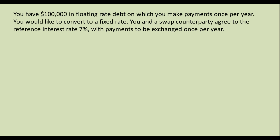In this example you have $100,000 in floating rate debt on which you make payments once per year. That just means that the rate you pay is based on something like LIBOR or the prime rate, and when it changes the interest payment that you make also changes. We're saying here that you don't like that, and so you would like to convert to a fixed rate. You and a swap counterparty agree to a reference interest rate of 7%, with payments to be exchanged once per year.